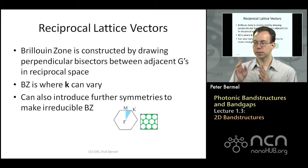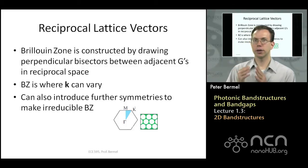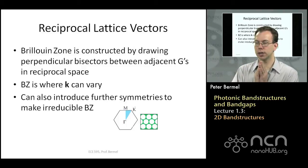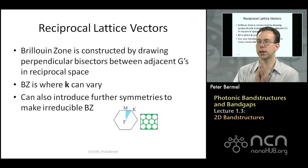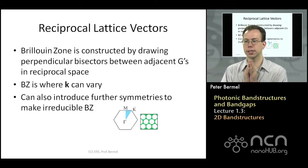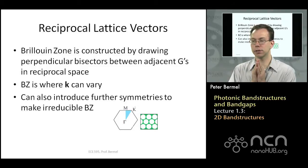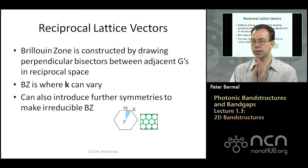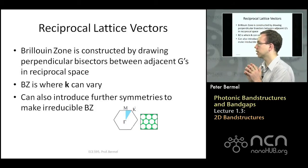The Brillouin zone is a special region in which we calculate all our band structures. Because of the symmetry of these problems, everything inside the Brillouin zone tells us everything we need to know about the system and all the bands. We don't have to look outside of the Brillouin zone to understand the system. This is a generalization of the band structures we saw earlier in 1D, extended here into 2D.